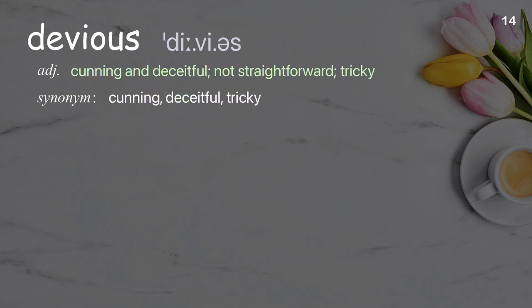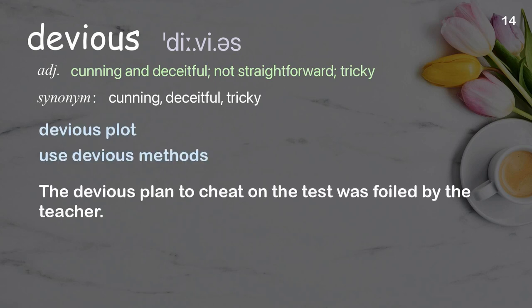Devious: Cunning and deceitful, not straightforward, tricky. Examples: Devious plot. Use devious methods. The devious plan to cheat on the test was foiled by the teacher.